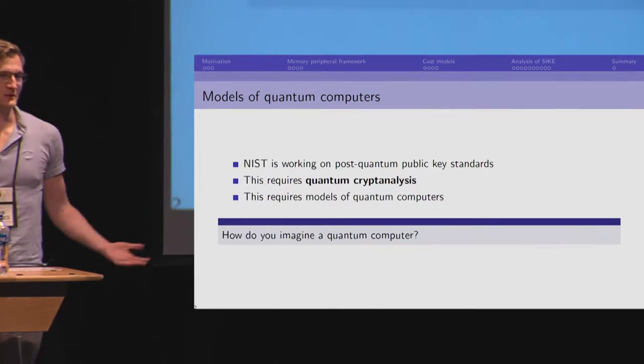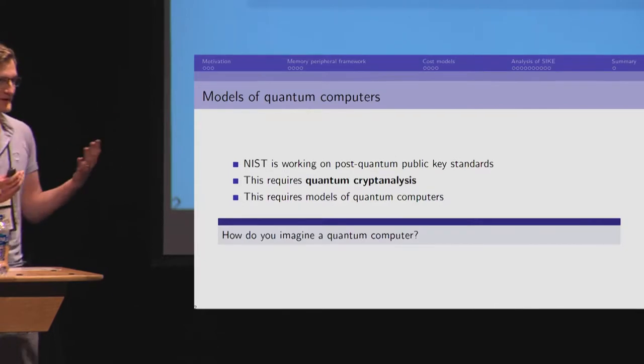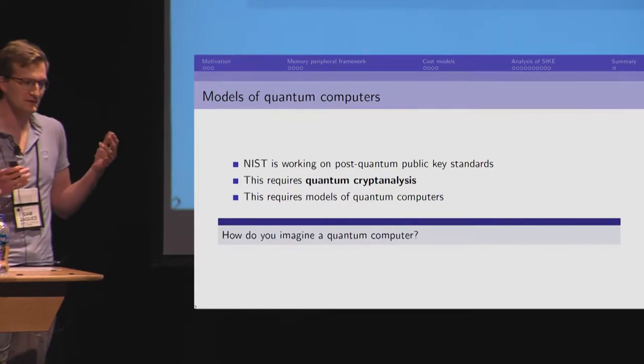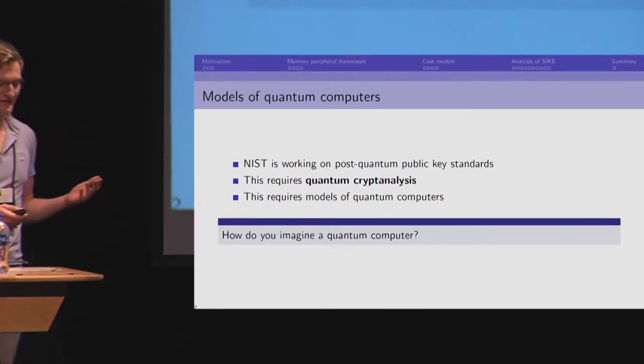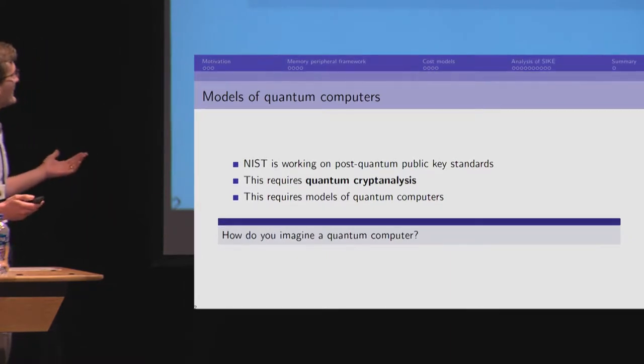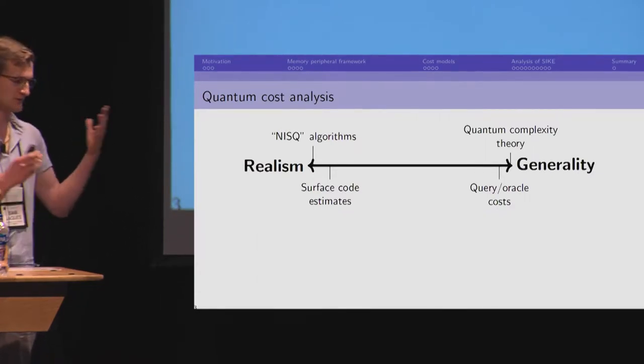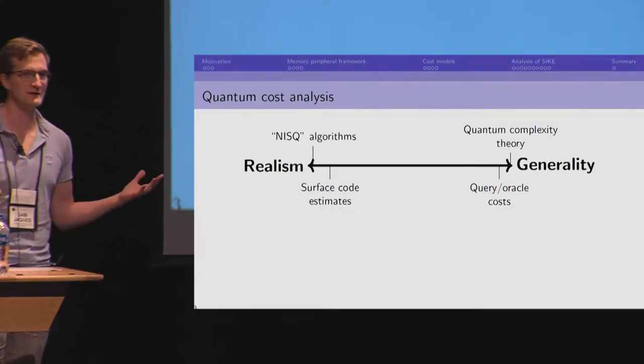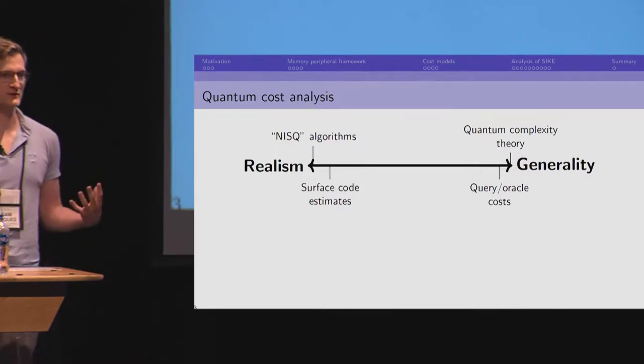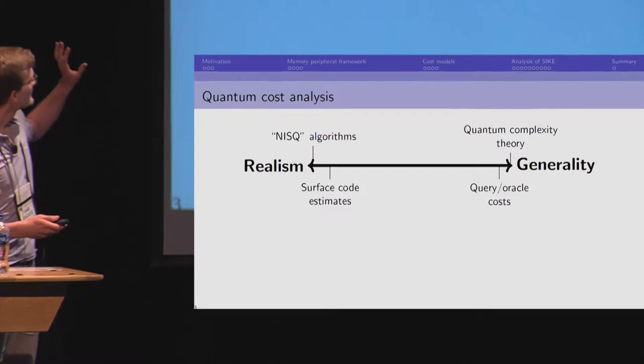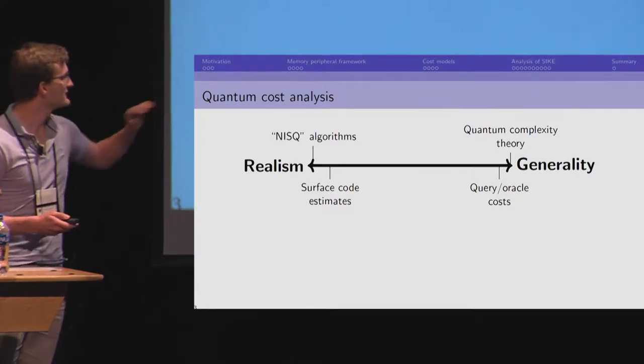So, how do you imagine a quantum computer? What does it look like? What can it do? Is it actually just a classical computer, but maybe you've sprinkled in some magic quantum operations in addition to the other ones? Maybe you think you'd like to do a bit better and so you think there's this enormous body of literature already existing on quantum computers and you want to draw from this. Here we're going from realism to generality in these models.